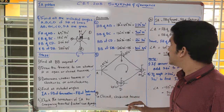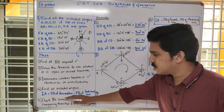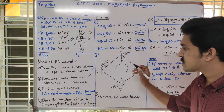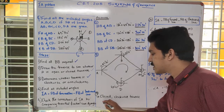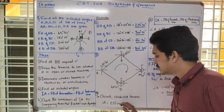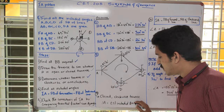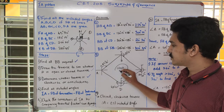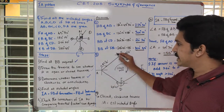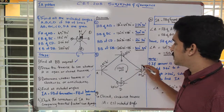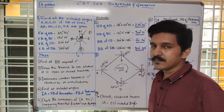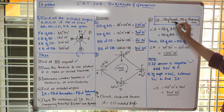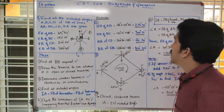The next step is to find the included angles using the equation: included angle equals fore bearing of the forward line minus fore bearing of the backward line. Since we have a clockwise traverse, the included angles we find will be exterior included angles — all angles will be exterior. We will then use a check to verify correctness.